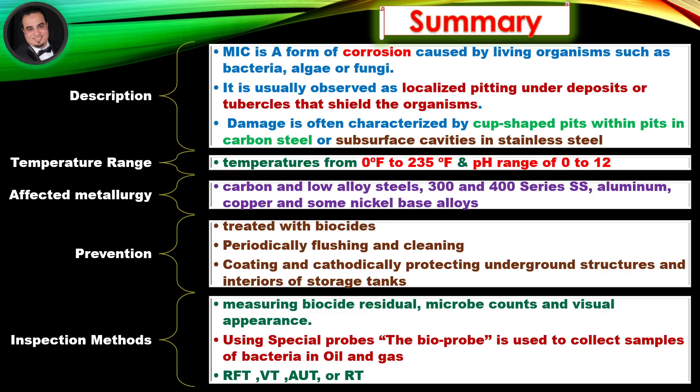Temperature range: 0°F to 235°F and pH range of 0 to 12. Affected metallurgy: carbon and low alloy steels, 300 and 400 series stainless steel, aluminum, copper, and some nickel base alloys. Prevention: treat with biocides, periodically flush and clean, coating and cathodically protect underground structures and interiors of storage tanks.